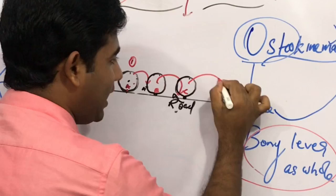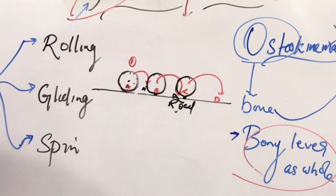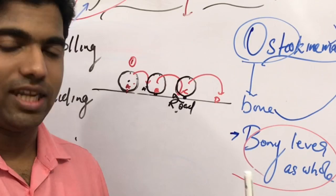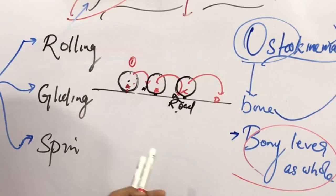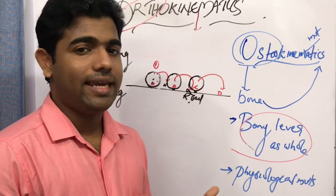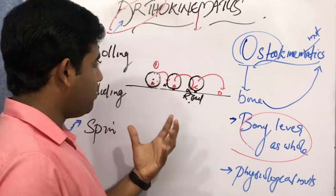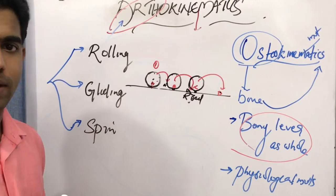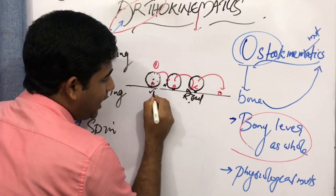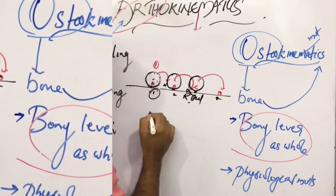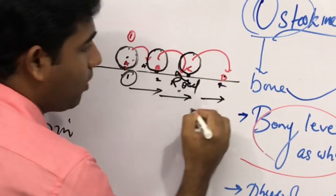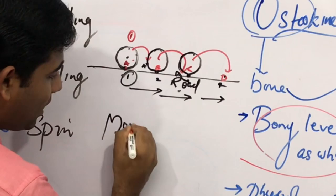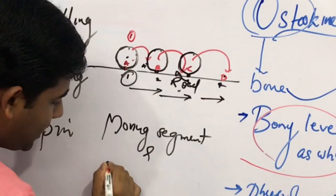Rolling is a movement in which every time a new point comes in contact with the articulating or contact surface. In rolling, new points a, b, c, d are successively contacting — not the same point moving across. You can also note that the contact points on the ground also change: from one to two to three to four.